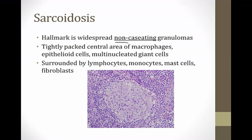The hallmark of sarcoidosis is a non-caseating granuloma. Decades ago, when pathologists looked at the infected tissue of patients with granulomatous diseases, they found that some granulomas had this yellowy cheese-like material in them, and they called those caseating granulomas — that's what you see in tuberculosis. In contrast, in patients with sarcoidosis, you see non-caseating granulomas, which don't have that cheese-like necrotic tissue in the middle.